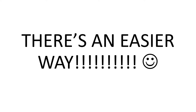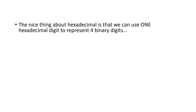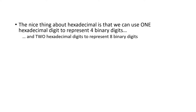Thankfully there's an easier way. Instead of typing long strings of binary numbers, computer programmers decided that hexadecimal would be an easier system. The nice thing about hexadecimal is that we can use one hexadecimal digit to represent four binary digits, and two hexadecimal digits to represent eight binary digits. For example, 1 0 1 0 — four binary digits — can be represented with one hexadecimal digit. And 1 0 1 0 1 0 1 0 — eight binary digits — is represented using two hexadecimal digits: A A.